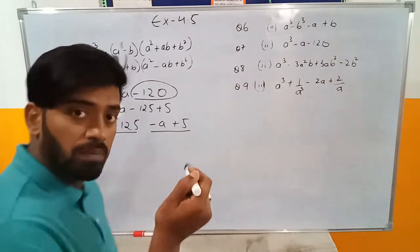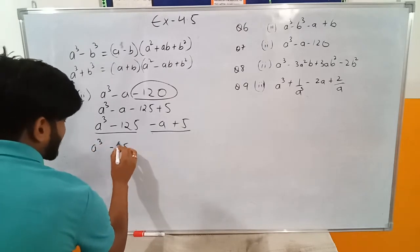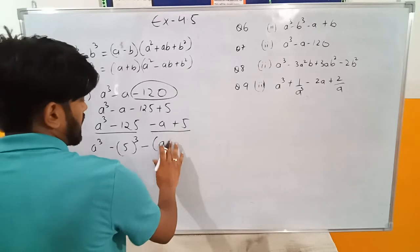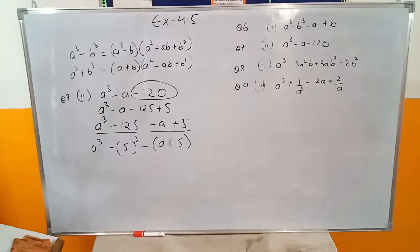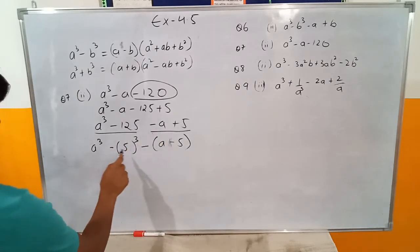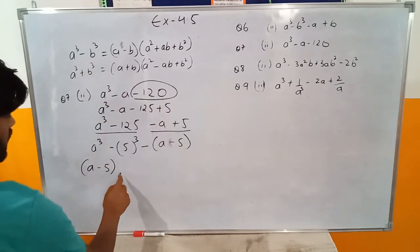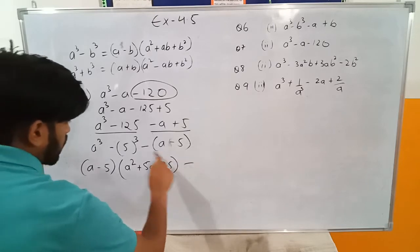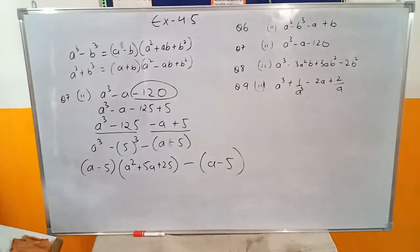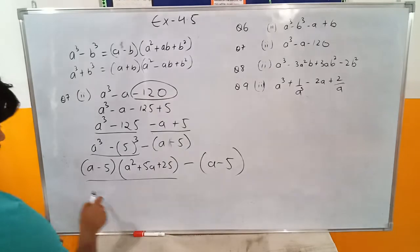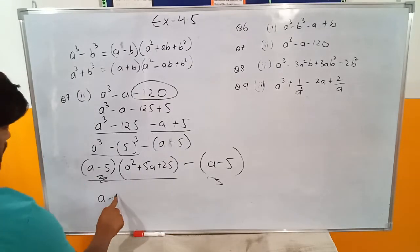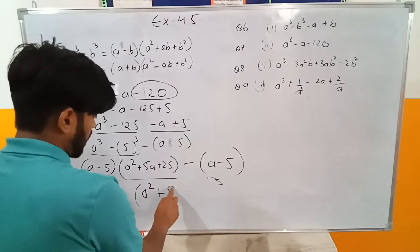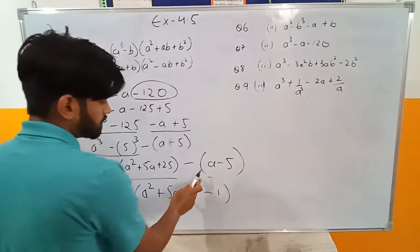Now for a cube minus 125, I can write this as a cube minus b cube where b is 5. Applying the formula: a minus 5, bracket a square plus 5a plus 25, and what remains from the other pair is minus bracket a minus 5. Now a minus 5 is common in both parts, so I take it outside.